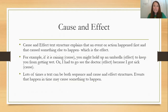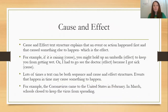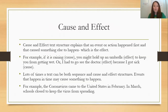Lots of times the text we read can be both sequence and cause and effect, because events that happen in a time order or sequence can make something else happen — that would be a cause and effect relationship. Here's an example happening to us right now: the coronavirus came to the United States in February — we have a date. In March, schools closed to keep the virus from spreading — another date. So we have a sequence: February then March. And why did we close schools? To keep the virus from spreading — that's a cause and effect relationship along with the sequence.